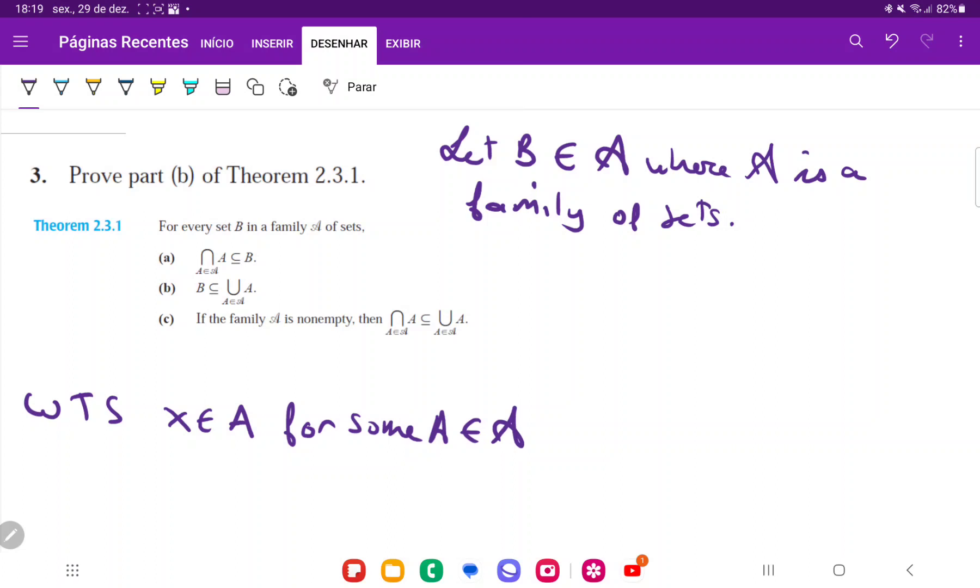So what we're going to do here is we're going to say let X belong to B. Then, because we said that B belongs to the family of sets A, we're going to say that X belongs to A, where A is some set, for some A belonging to the family.